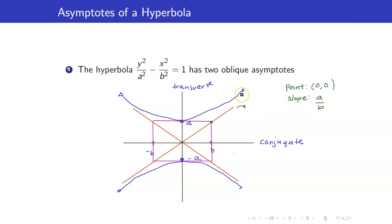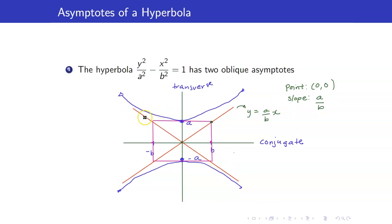Therefore, the asymptote equation is Y = (A/B)X. The other diagonal is decreasing, so its slope is negative, giving Y = −(A/B)X. These are the two oblique asymptotes for a vertical hyperbola of the form Y²/A² − X²/B² = 1.